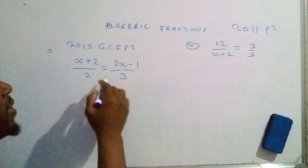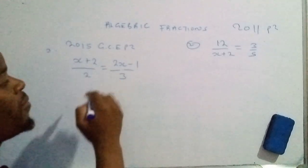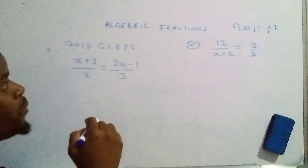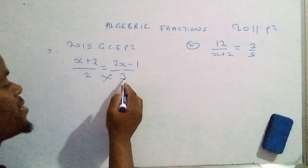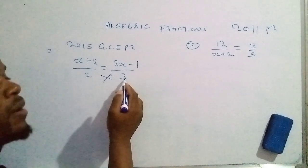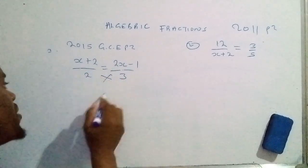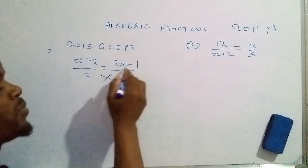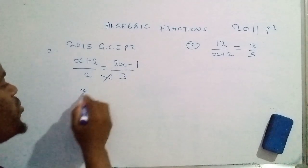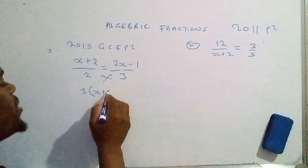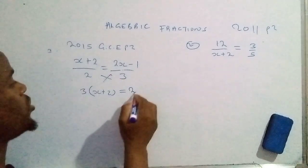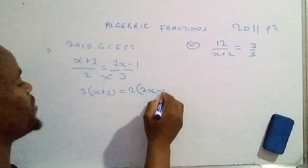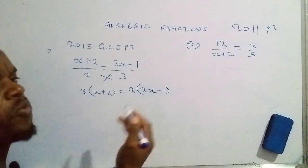Now you have to take note of this: if there is an equal sign here, what you need to do is simply cross multiply. So this 3, which is a denominator here, will be multiplied by the numerator there, and this 2 there will be multiplied by the numerator there. So 3(x+2) equals 2(2x-1). So we can work this out to the end by expanding the brackets.